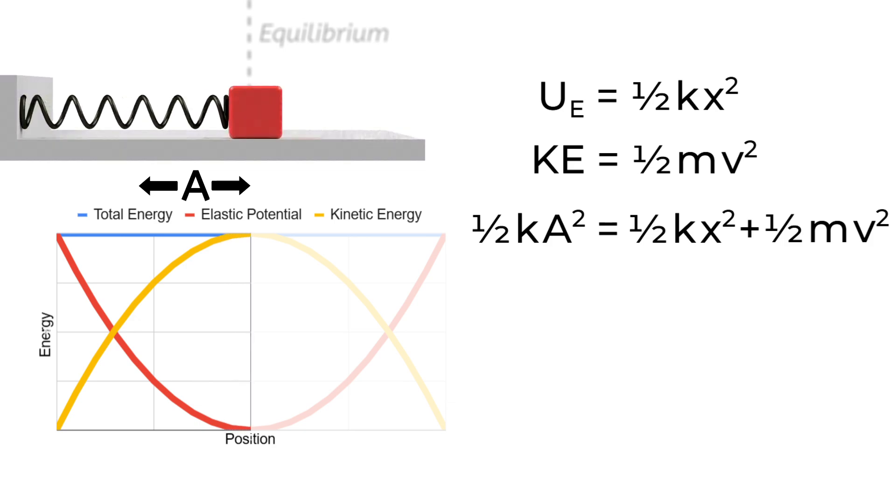By the time the block gets to equilibrium, or more importantly the spring gets to equilibrium, no energy is going to be stored in the spring. All of that energy will have turned into kinetic energy, which means when the block passes through equilibrium, the block will be traveling at its maximum velocity.